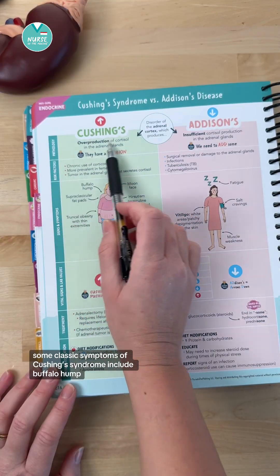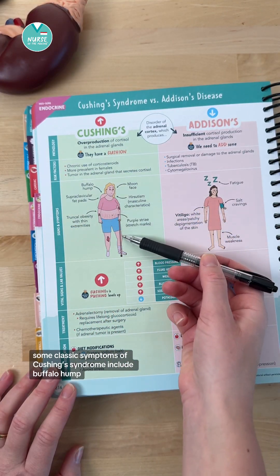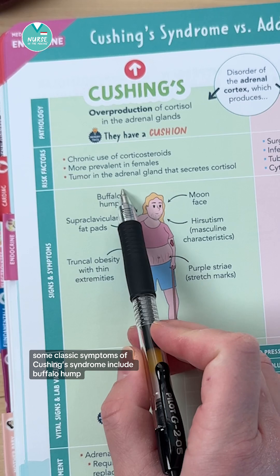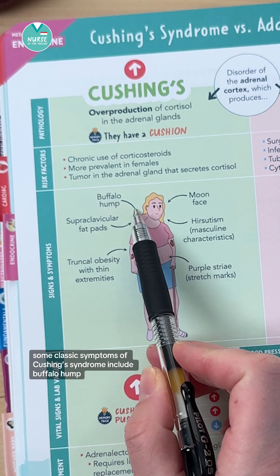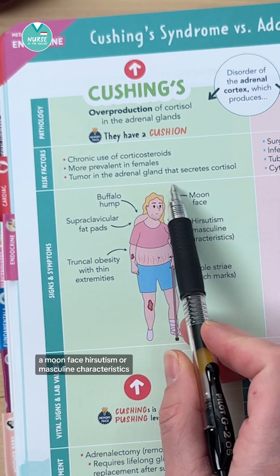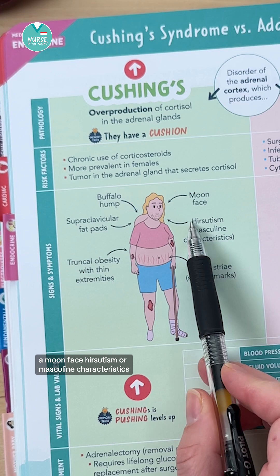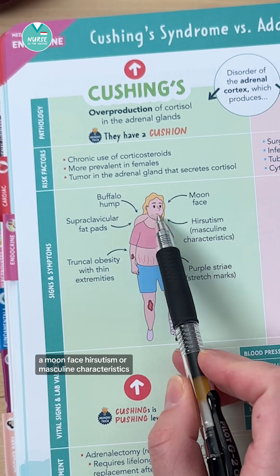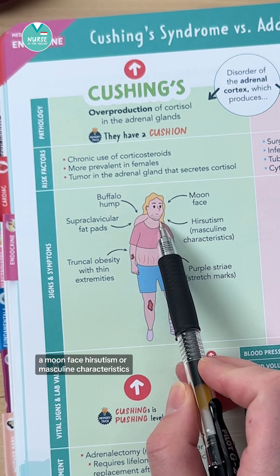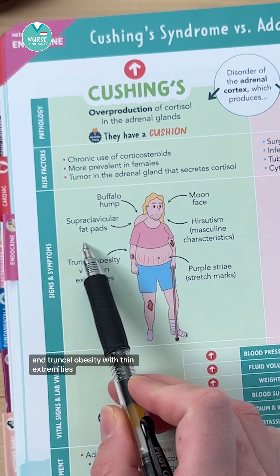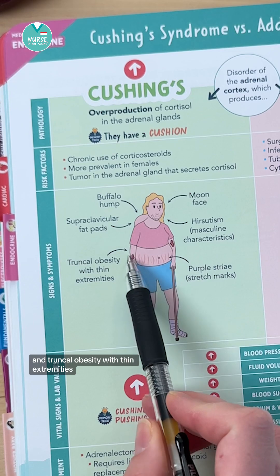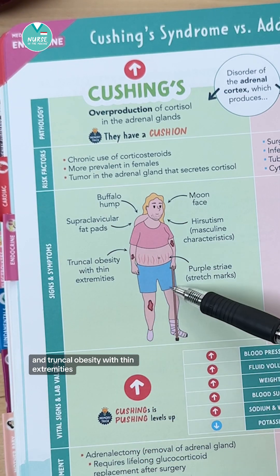Some classic symptoms of Cushing's syndrome include buffalo hump, a moon face, hirsutism or masculine characteristics, and truncal obesity with thin extremities.